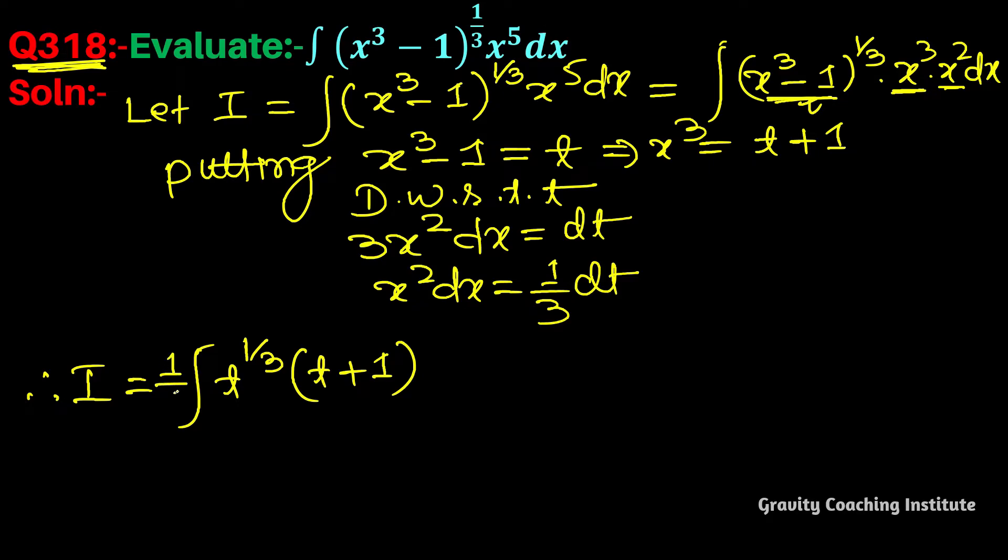Taking the constant 1/3 outside the integration: = (1/3)∫[t^(4/3) + t^(1/3)]dt.